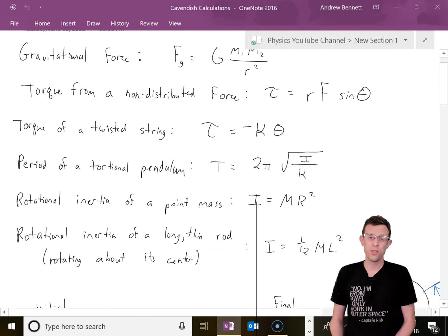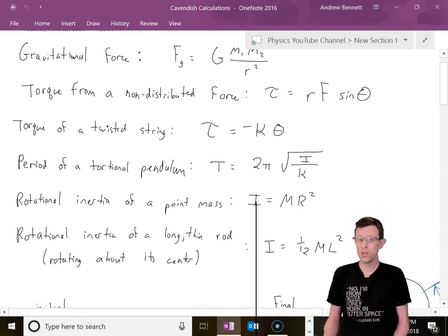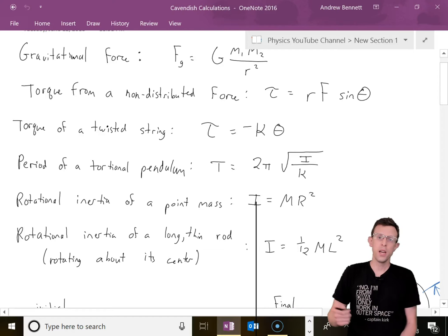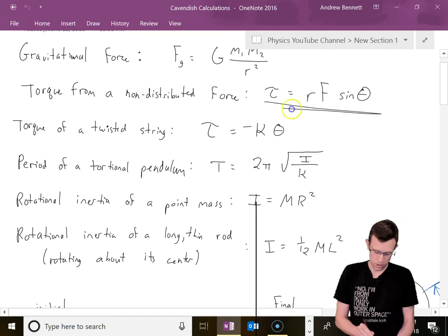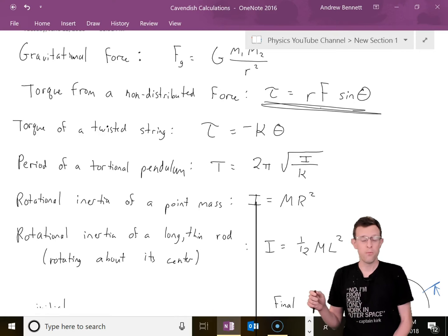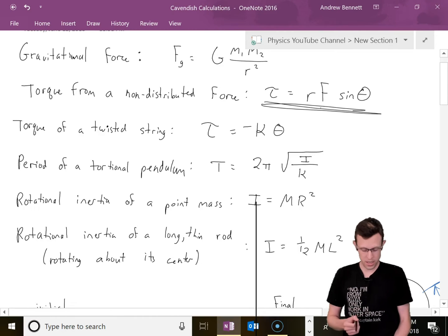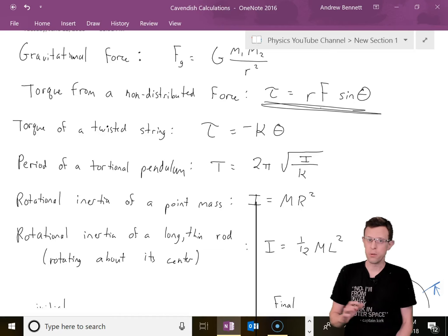We're going to measure this using a torsional balance, so we have to look at torque in a few different ways. We've got torque from a non-distributed force, torque equals RF sine theta. The R is the distance from where that force acts to the axis of rotation, F is the magnitude of the force, and theta is the angle between the R vector and the F vector. For us, that'll be 90 degrees, so sine 90 is 1.